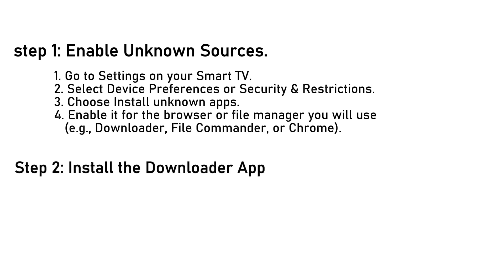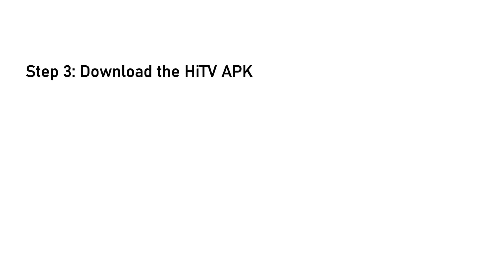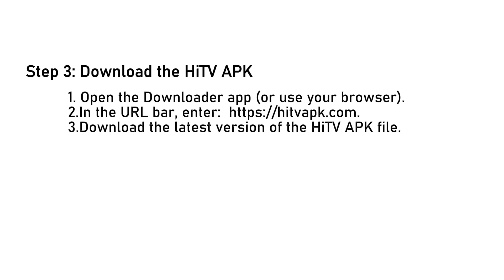Step two: install the Downloader app if needed. If your TV doesn't have a browser, use Downloader to get HiTV. Number one: open the Google Play Store on your TV. Number two: search for Downloader by AFTVnews and install it. Number three: give it permission to install unknown apps as in step one.